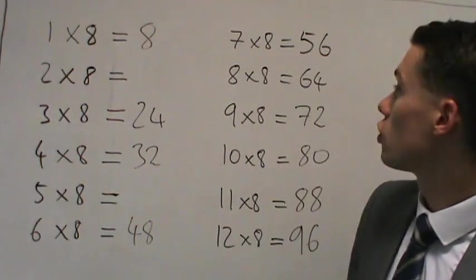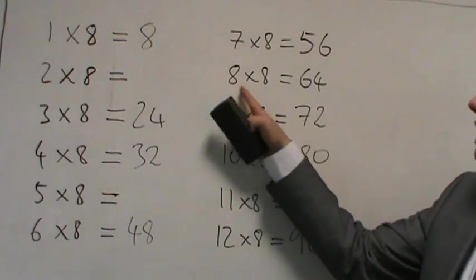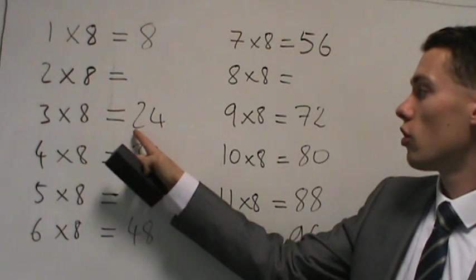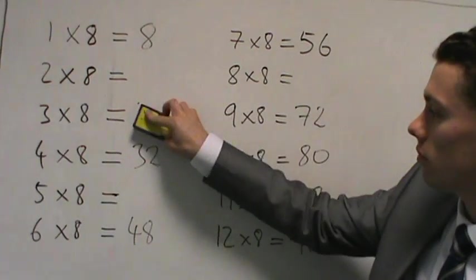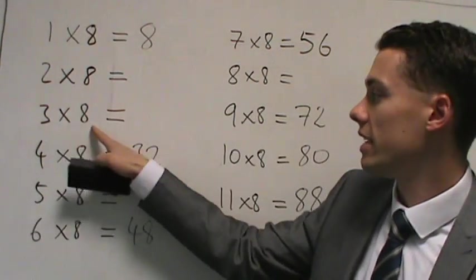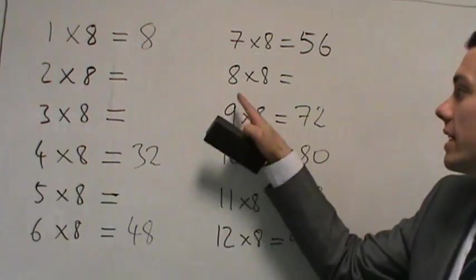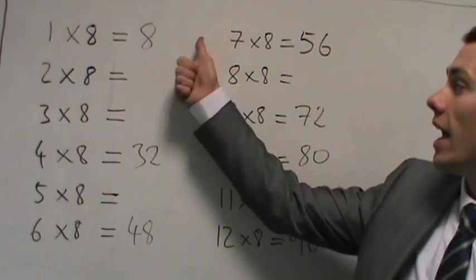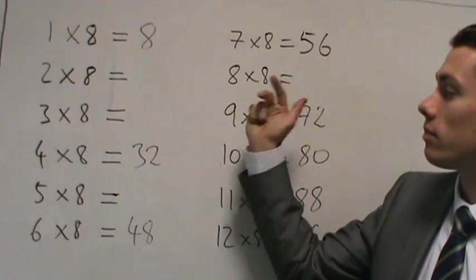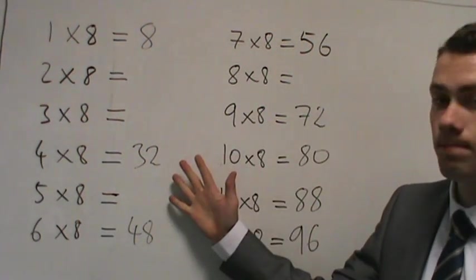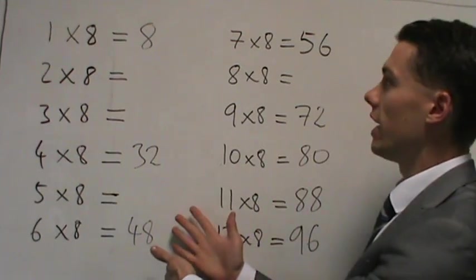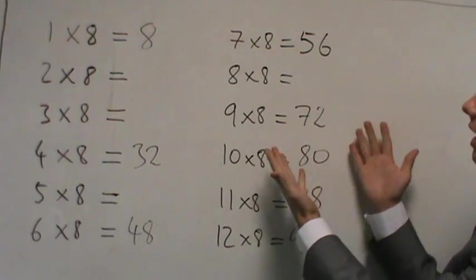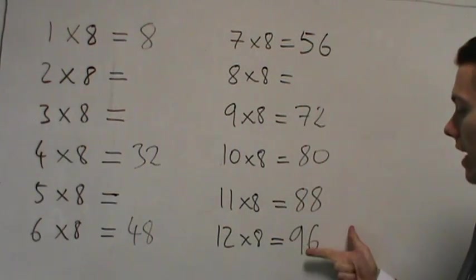So now I'm going to rub out 2 more. I'm going to rub out 8 times 8 which is 64. And I'm also going to rub out 3 times 8 which is 24. So 3 times 8 is 24 and 8 times 8 is 64. So let's see if you can get all 4 of these correct. 8, 32, 48, 56, 72, 80, 88 and 96.